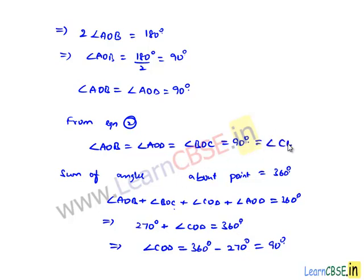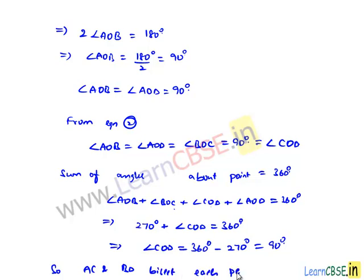So all the angles about point O are equal to 90 degrees. Therefore we can say AC and BD bisect each other perpendicularly. This is what we were required to prove.